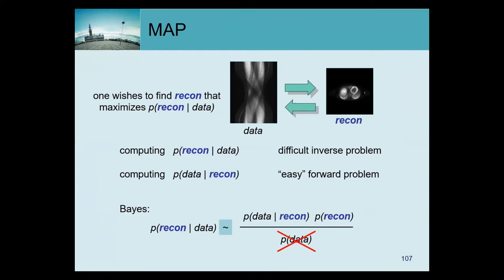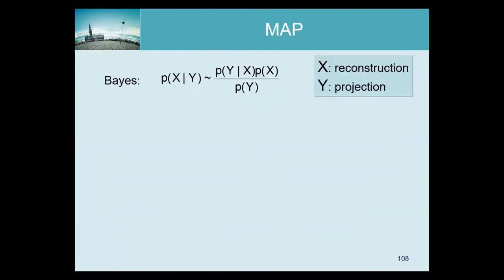We don't claim that we put a lot of prior knowledge in there — there's lots of prior knowledge we have and will not use. The only thing is that we tell the algorithm: don't make it too noisy. If we do that well, then we don't need to bother about stopping rules anymore. We can iterate all the way because it will maximize a function that accounts for images not being noisy.